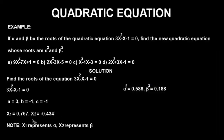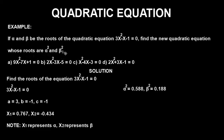So x1 represents alpha and x2 represents beta in this question. What we're going to do next is store alpha and beta in the calculator respectively, because we are asked to find the new quadratic equation whose roots are alpha squared and beta squared. So we store alpha and beta, then find alpha squared and beta squared.